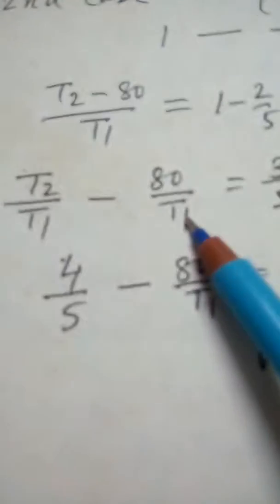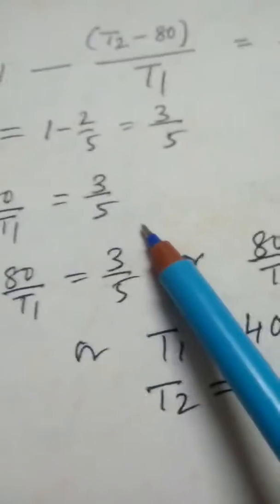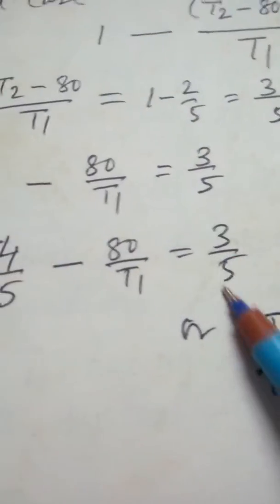Okay? Now, T2/T1 - 80/T1 = 3/5. So, 4/5 - 80/T1 = 3/5.